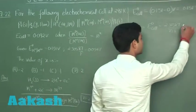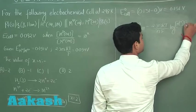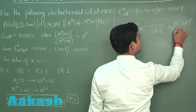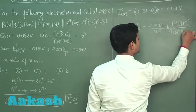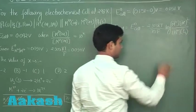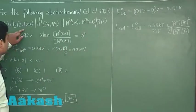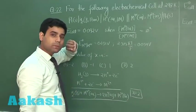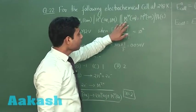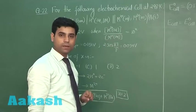So I am writing it here - M 2 plus ion concentration into pressure of hydrogen. Here H ion concentration is 1 molar and pressure of hydrogen gas is 1 bar. M 4 plus M 2 plus ion concentration ratio is given here 10 to the power x.